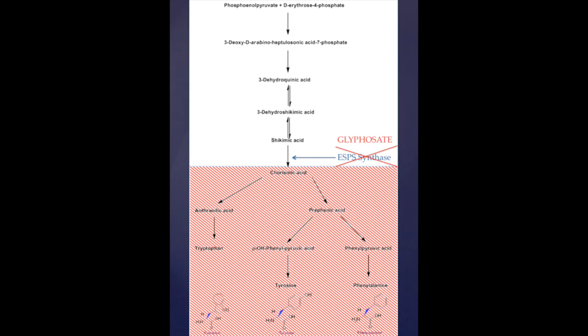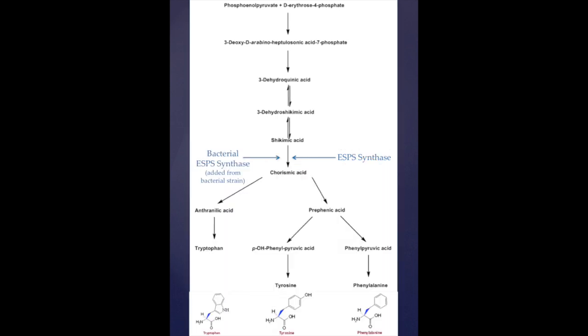The ESPS synthase cannot work anymore, thus the three essential compounds at the bottom cannot be produced as the pathway is inhibited. Therefore, the plant cannot survive or grow. However, there is an alternative through genetic modification using bacterial ESPS synthase.